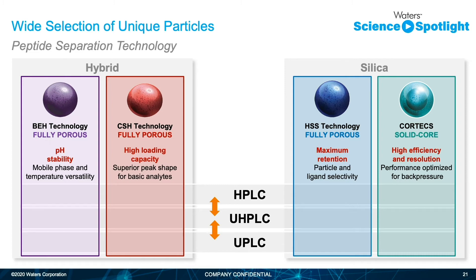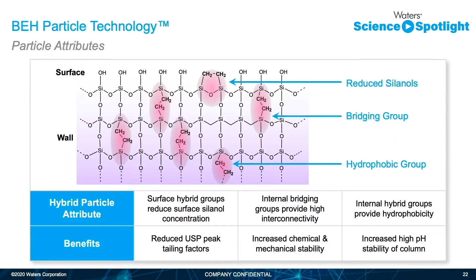The first three of the four particles — excluding CORTEX — are available as peptide columns, meaning the particles are QC'd with digested protein samples instead of a mixture of small molecules. So before you even take these columns out of the box, they have already been introduced to a similar mixture of digested peptides that you would be injecting for your peptide map or MAM. BEH technology allows for reduced peak tailing, increased chemical stability, and a much wider pH range that allows for longer column lifetimes, reproducibility, and stability. For peptides, the BEH particle is available in 130 angstrom pore and 300 angstrom pore for larger peptides or even smaller proteins.